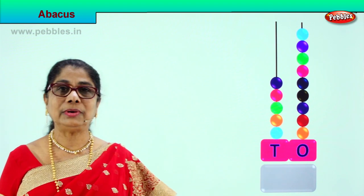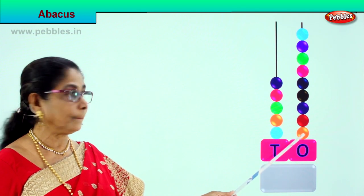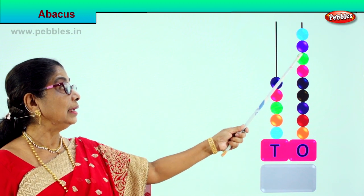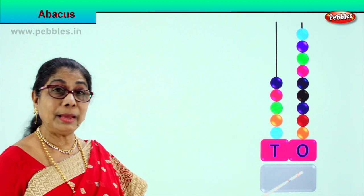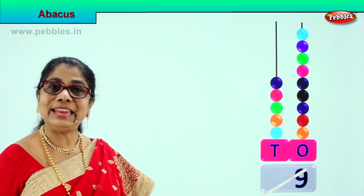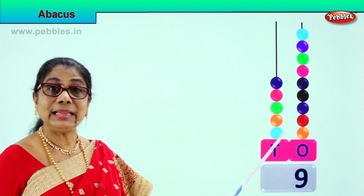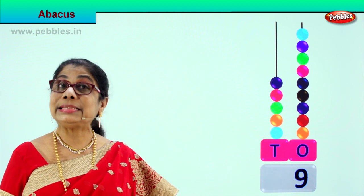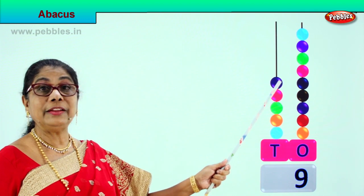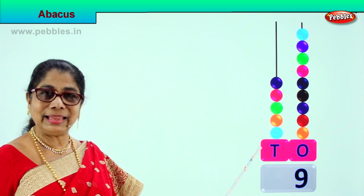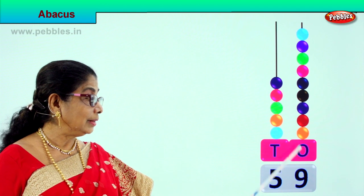Now let's count what's in the ones place. How many beads are there? Count: 1, 2, 3, 4, 5, 6, 7, 8, 9. There are 9 beads in the ones place, so we write number 9 — that means 9 ones. Let's go to the tens place. Each bead is 10, so we count in tens: 10, 20, 30, 40, 50. There are 5 beads — that's 50. So we write 5 here — 5 tens, 9 ones: 59.